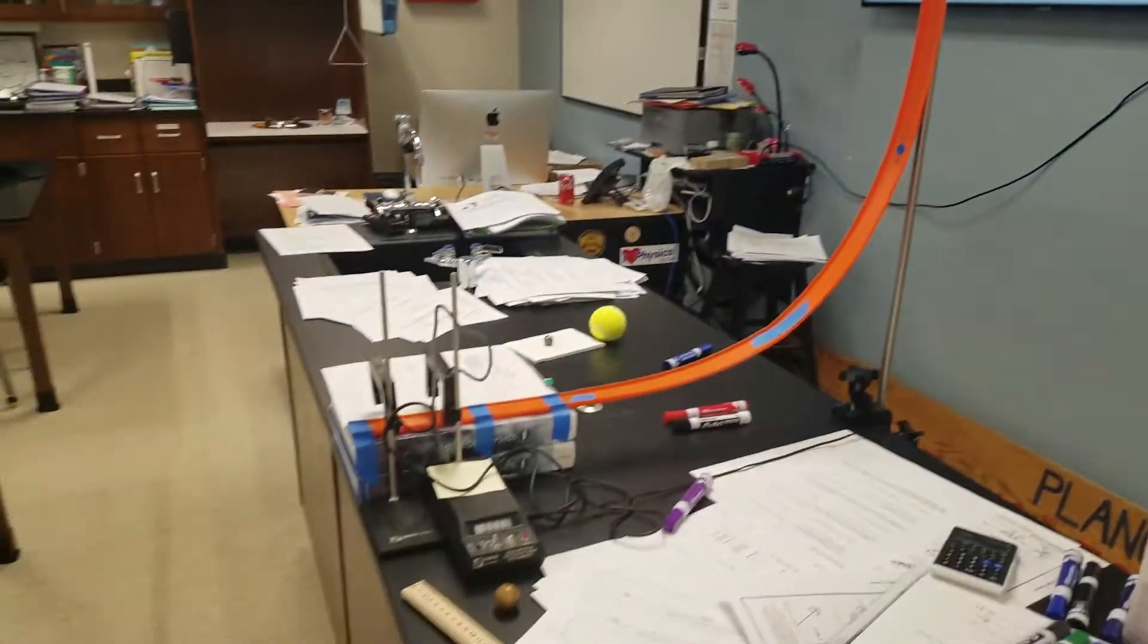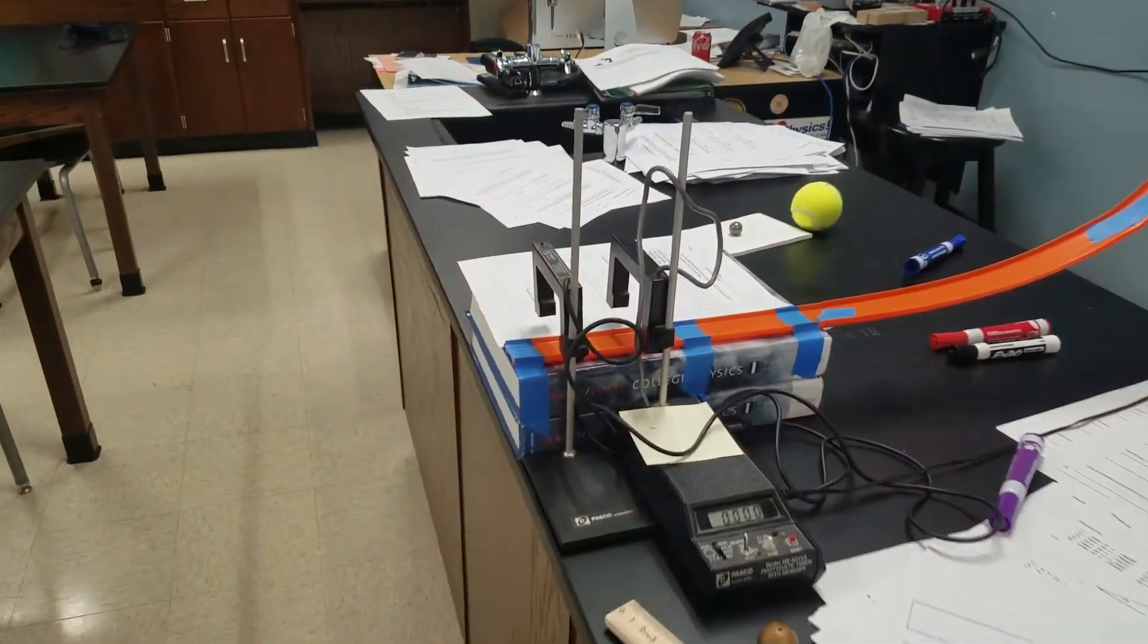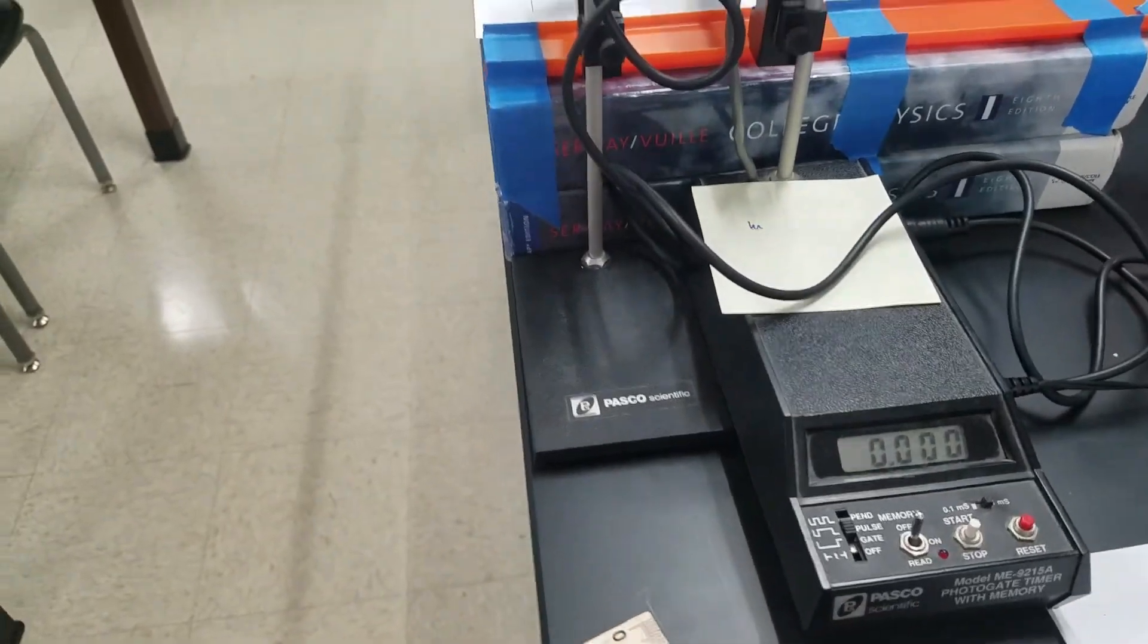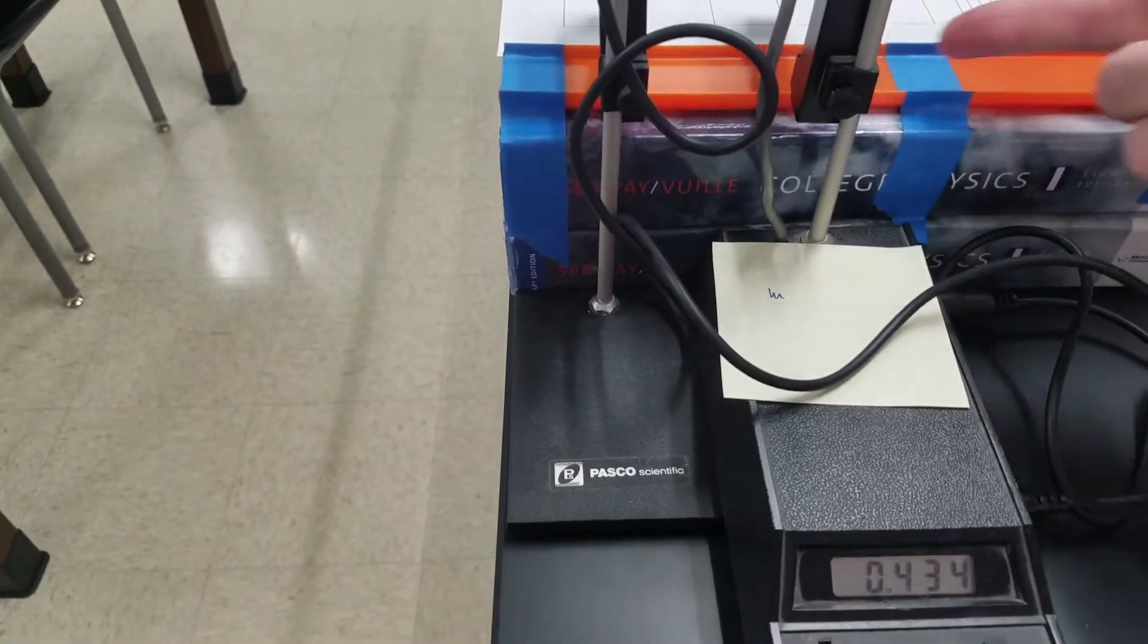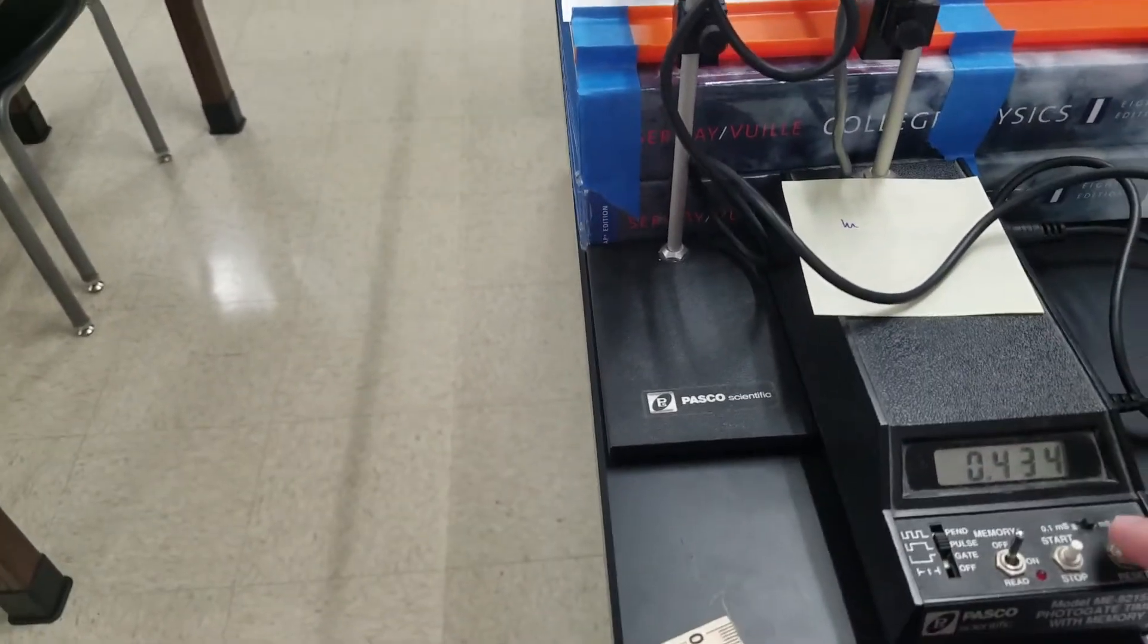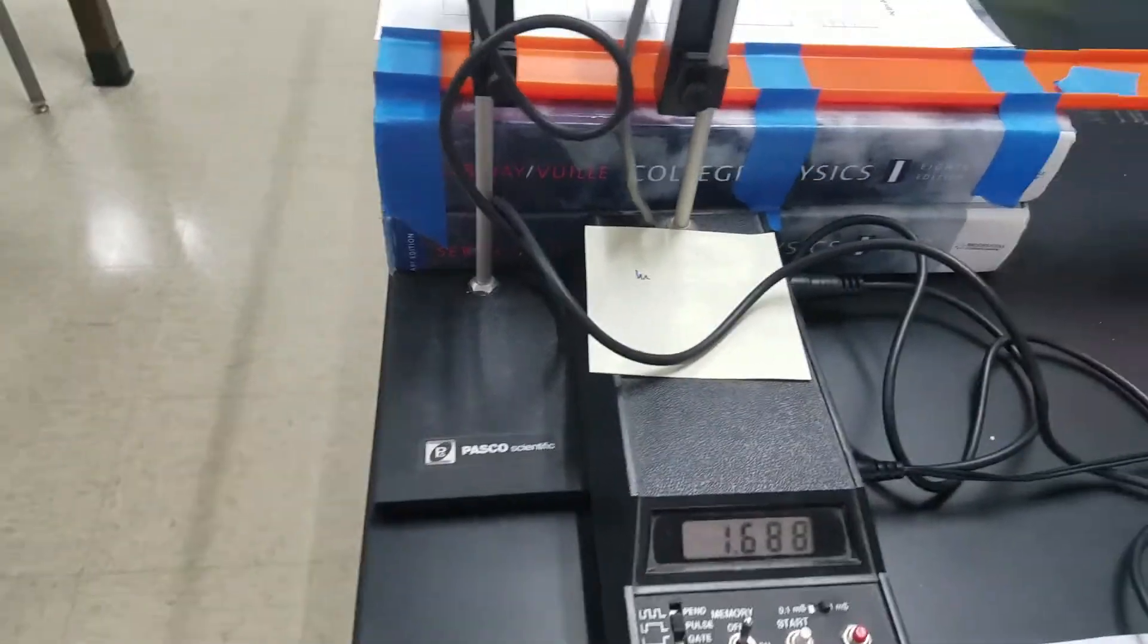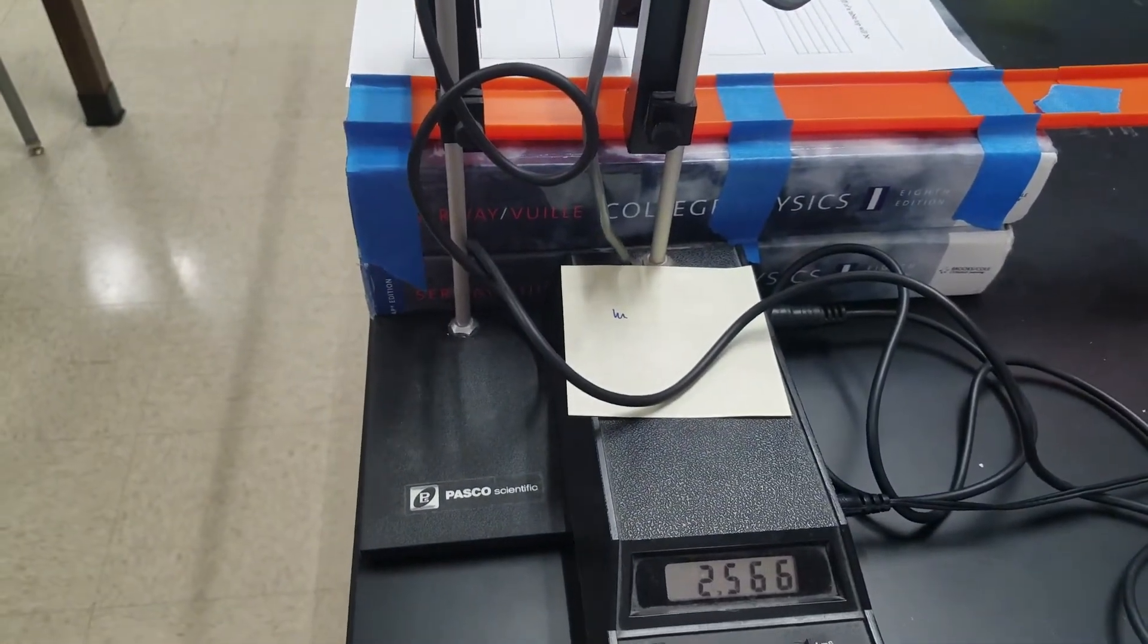I've got a Hot Wheels track and I've got a photo gate timer set up on pulse so when one is activated it starts. Let me try this again. Activate one, it starts the timer. Activate the other, it stops the timer.